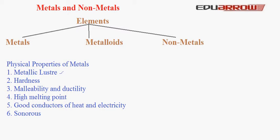Metals can be drawn into thin sheets; this property is called malleability. They can also be drawn into wires; this property is called ductility. Metals have high melting points, they are good conductors of heat and electricity, and they are sonorous, which means that they produce sound when struck by something.